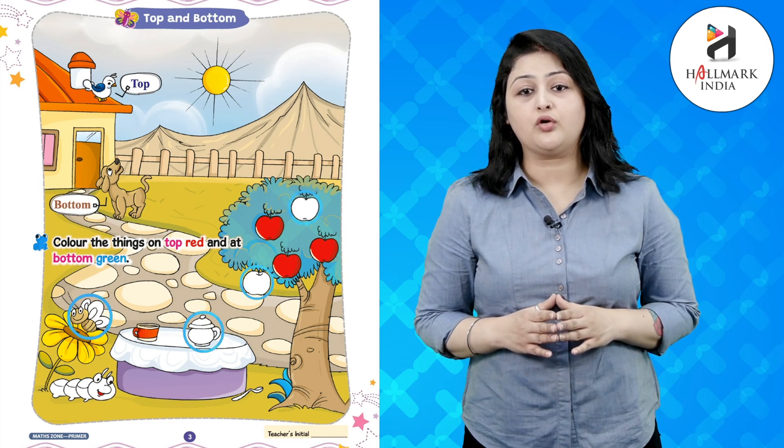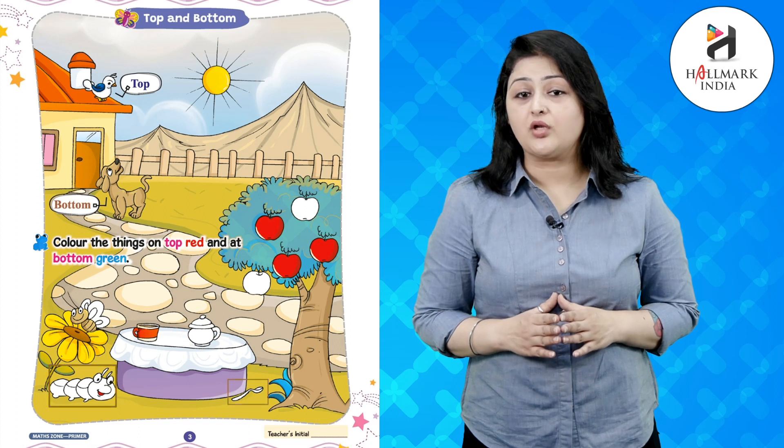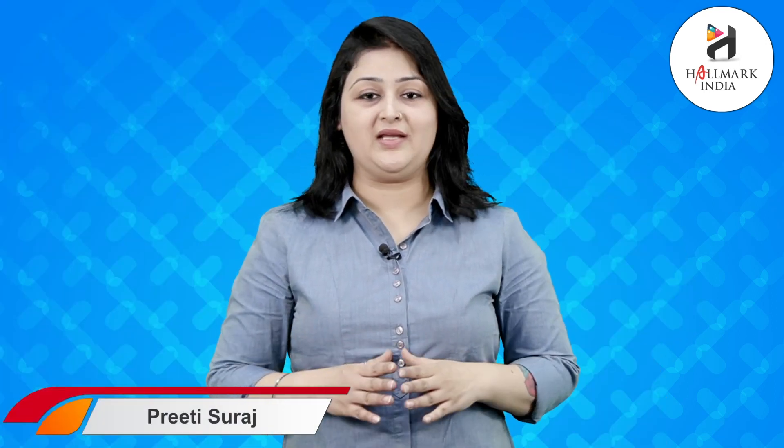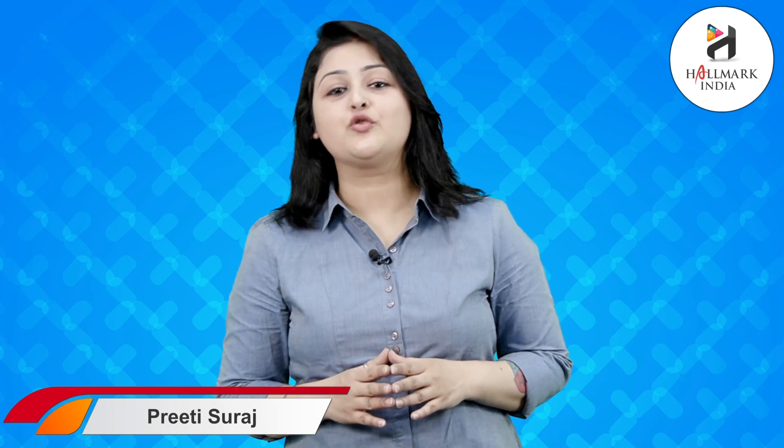Kids, a quick exercise — you need to color the things on top red and the things at the bottom green. I hope you have understood what we learned today in class, and you will practice it again and again to be perfect.